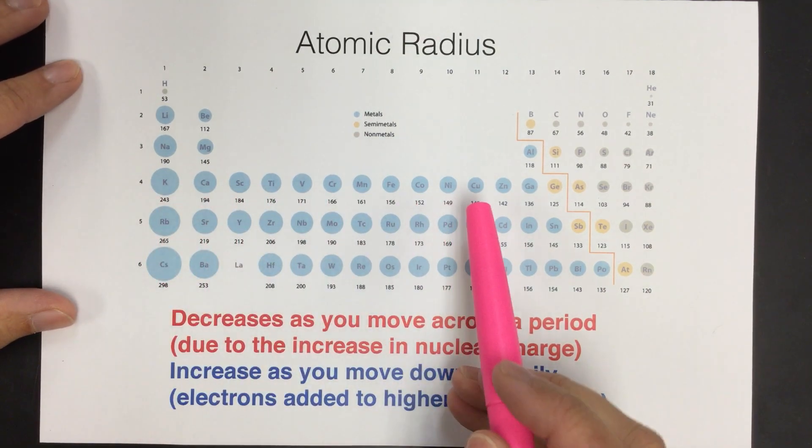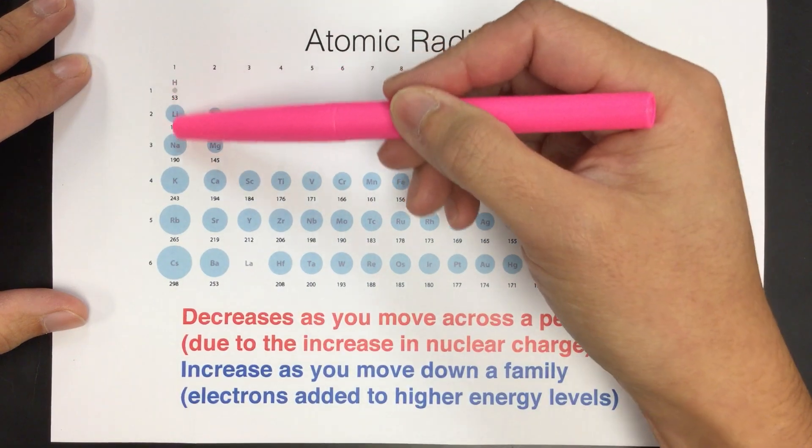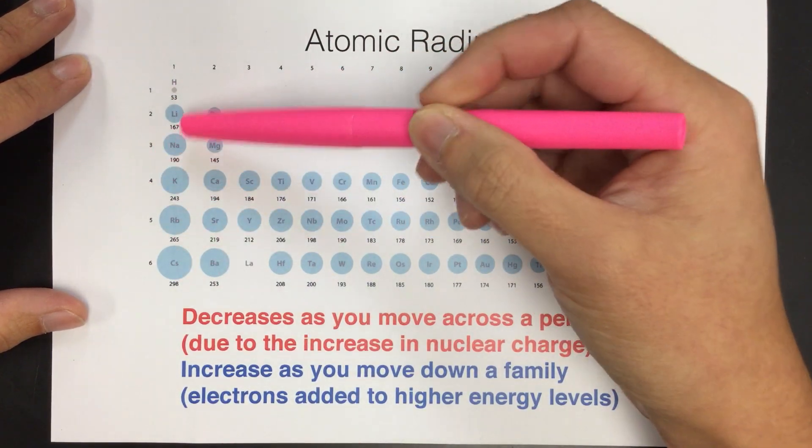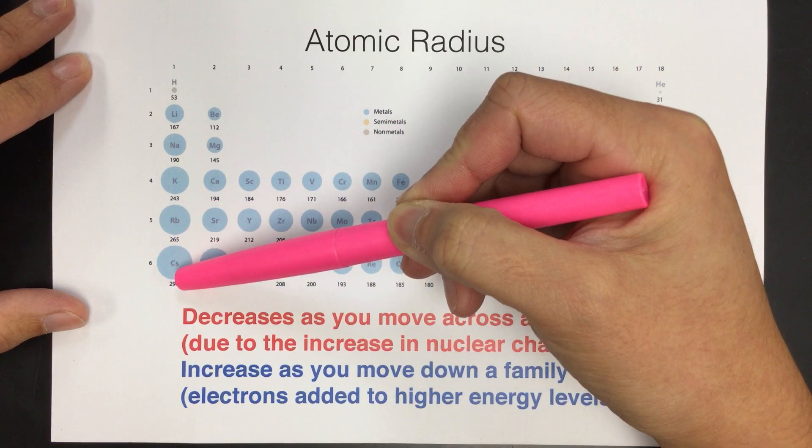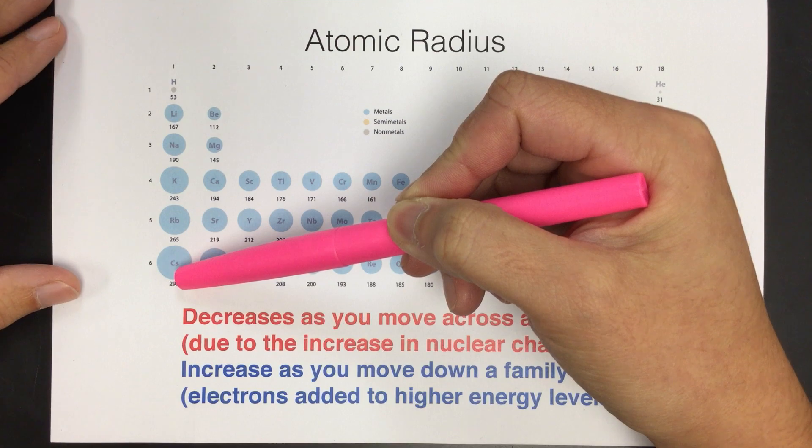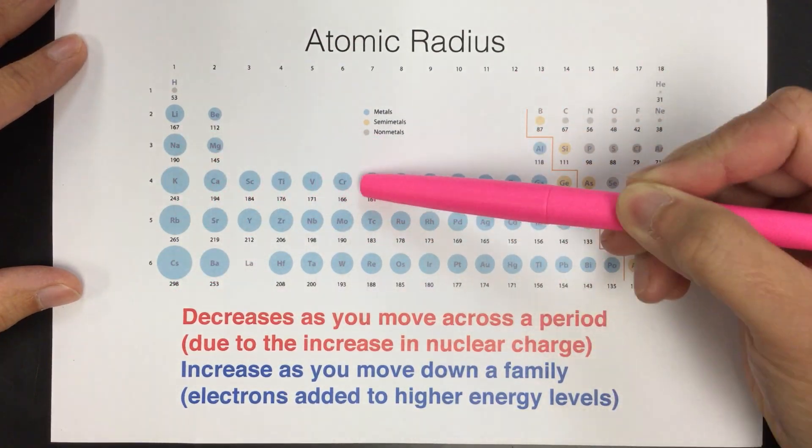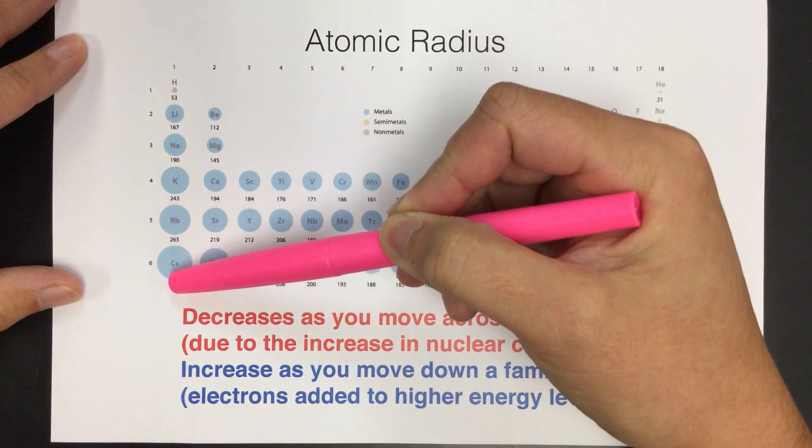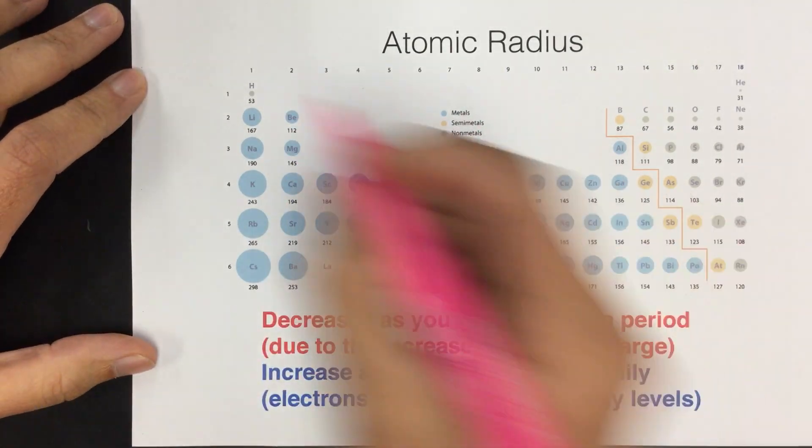Okay, so as we move across, they get smaller because of the nuclear charge. As we go down a family, this should make more sense because we'll notice if we look at the alkali metals, as we go down they get bigger. And we know that they're having more protons and electrons. So you might say, well, if this way they get smaller and we're adding protons and electrons, why are they getting bigger this way? And it helps to take a look at the energy levels of our atoms.